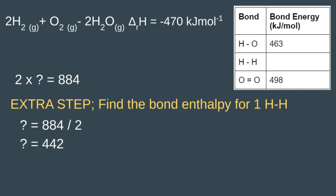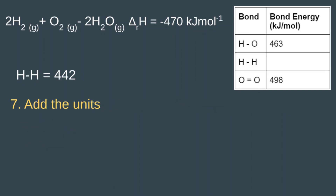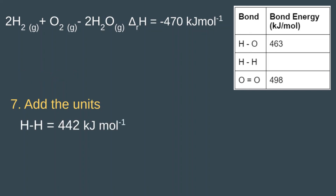That comes to 442. Finally we need to add the units — the units for bond energy are kilojoules per mole. So the H-H bond equals 442 kilojoules per mole.